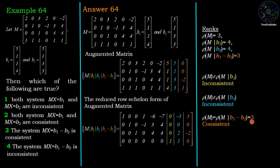And the rank of M equal to rank of augmented matrix M with B1 minus B2, which equals 3 - both have the same rank, therefore the system is consistent, so MX equals B1 minus B2 is a consistent system. So if we combine this result, then option 1, which says that both systems MX equals B1 and MX equals B2 are inconsistent, and the third option, the system MX equals B1 minus B2 is consistent, are the correct options.